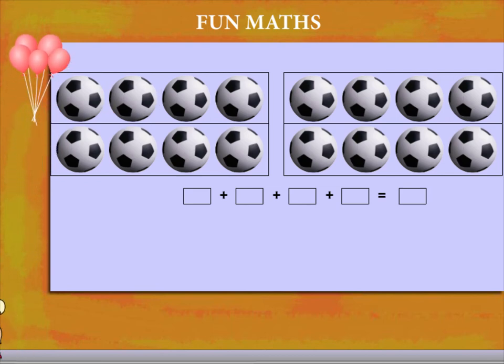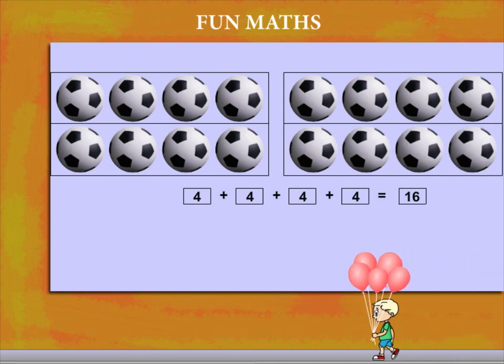1, 2, 3, 4 plus 1, 2, 3, 4 plus 1, 2, 3, 4 is equal to 16.